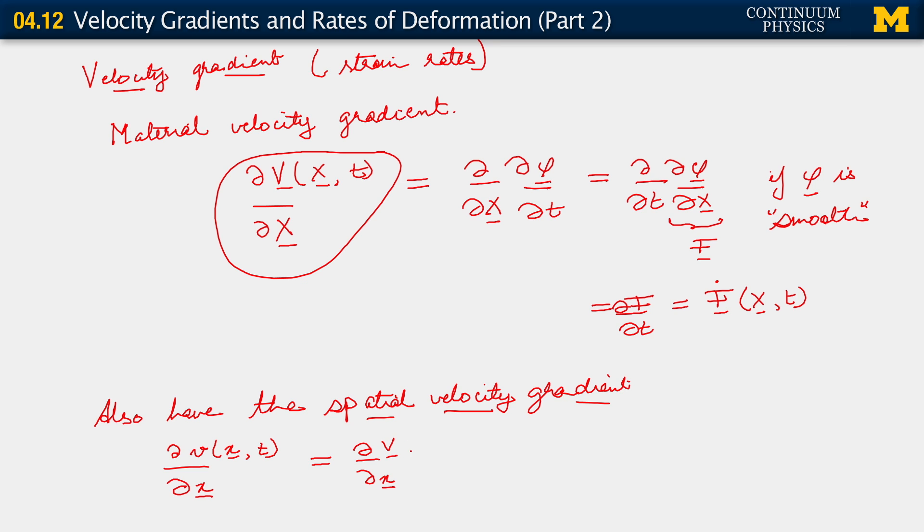The way we do this is to use the chain rule and the fact that we have these two different parametrizations for the same quantity for the velocity. So we will first write this as partial with respect to little x of V, capital V, x comma time. All of this remembering back here that little x is equal to phi of capital x and time. And then we observe that to compute the gradient on the right hand side, we can invoke the chain rule.